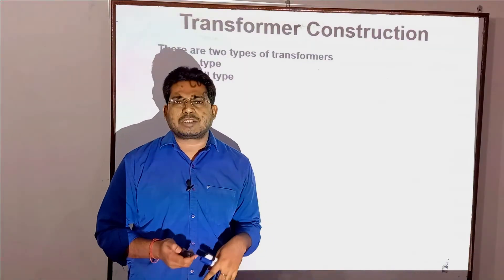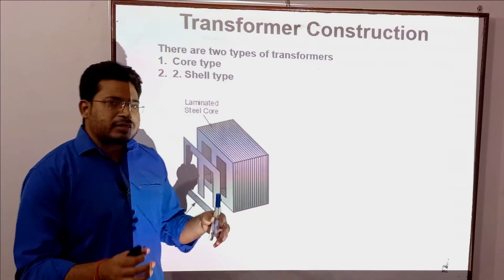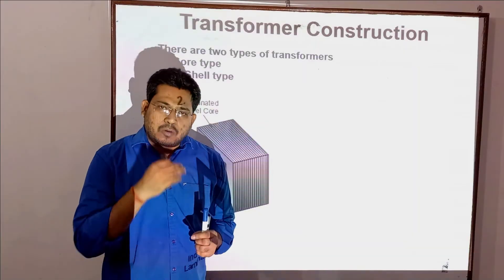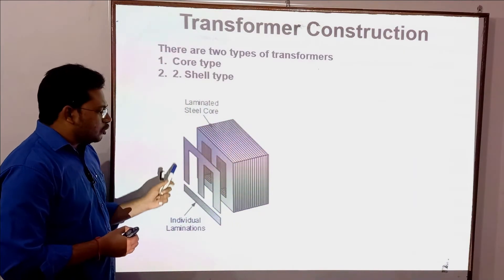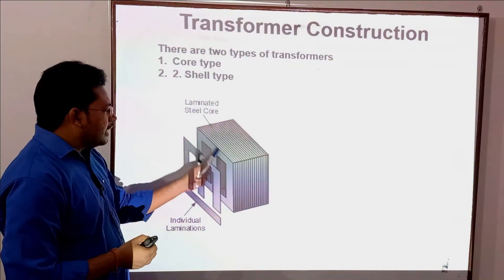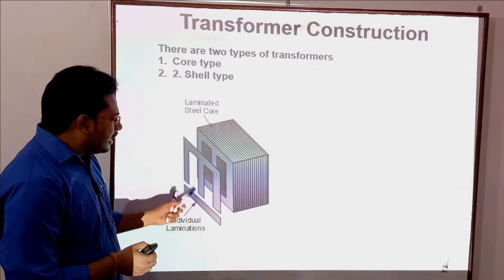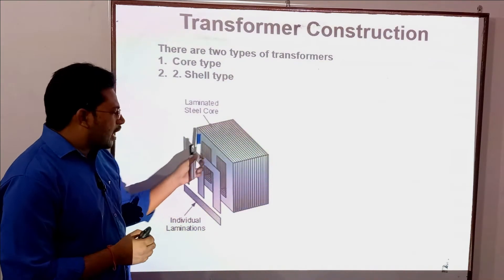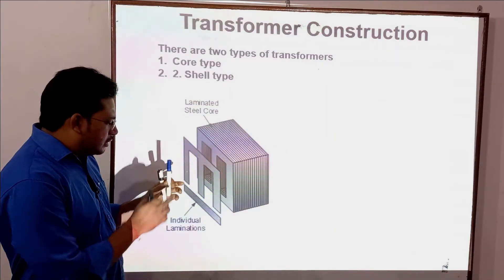The transformer core is not a solid block of material. To construct the core, we use thin laminated sheets stacked together. The core is built up as a stack of thin silicon steel laminations, typically 0.35 mm thick, creating a laminated core structure.